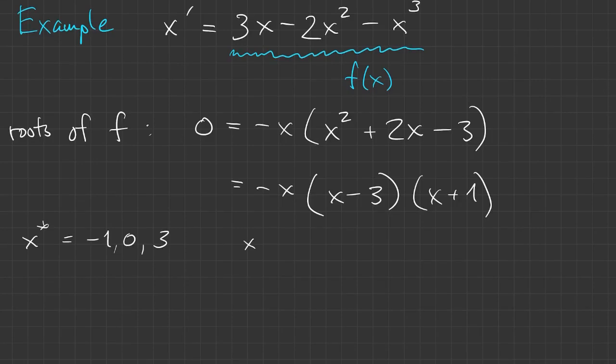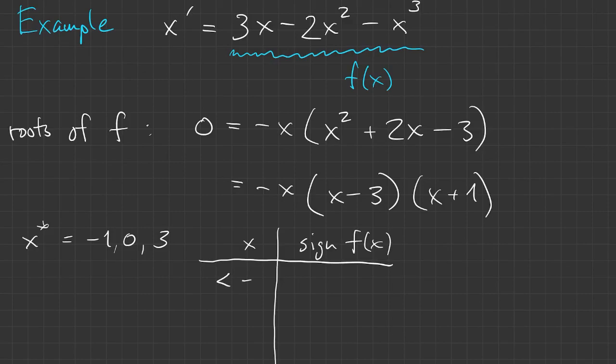We can make a table of what happens to the sign of f at different values of x. If x is less than negative one, we have a positive times a negative times a negative, so the whole thing is positive. If x is between minus one and zero, then the sign of the last factor changes but the others don't, so f(x) is negative. When we cross into zero to three, now it's positive. When it's greater than three, it's negative again.